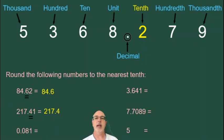In this next example, we have 0.081. This zero is in the tenth position, and the number after it is an eight. So that's bigger than four, so we have to round up. 0.081 becomes 0.1 when rounded to the nearest tenth.